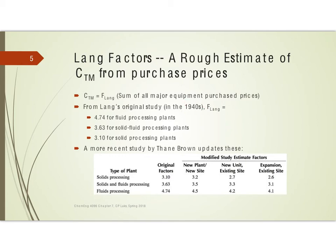This was a study from the 1940s. A more recent variation that I personally prefer is one by Thane Brown, and it has the same basic categories — solids, solids plus fluids, or fluids. If it's a new plant with a whole new site, this would be the same as our grassroots cost. If it's a new unit at an existing site, this is closer to being the total module. An expansion at an existing site also really, for our book's definitions, falls between total module and bare module — so if you're looking for a bare module, this would be the closest.